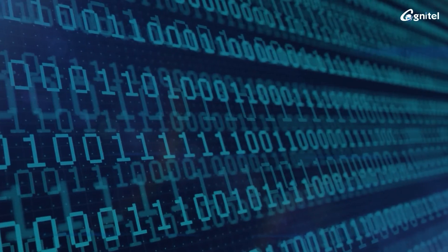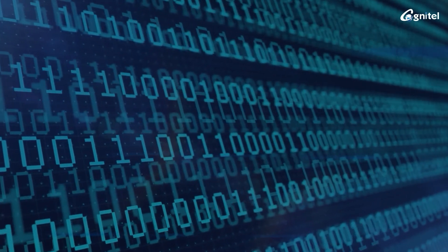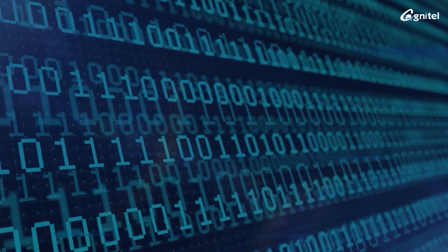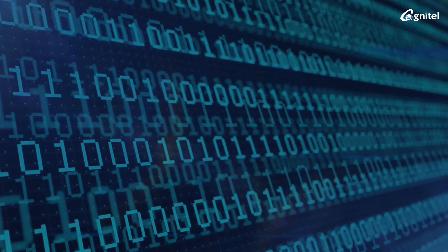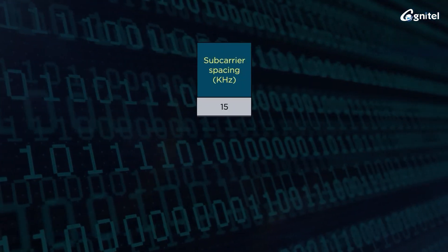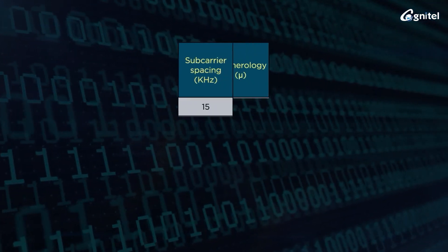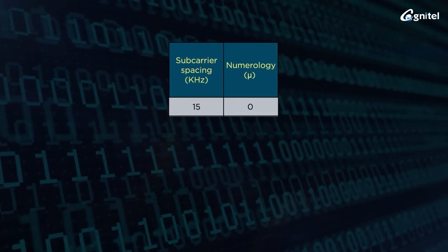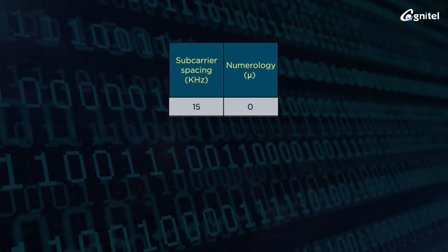This flexibility in the frame structure of 5G NR comes from the flexible numerology for different subcarrier spacings. 15 kilohertz subcarrier spacing is referred to as numerology zero, that has a single slot with duration of 1 millisecond or 1000 microseconds.